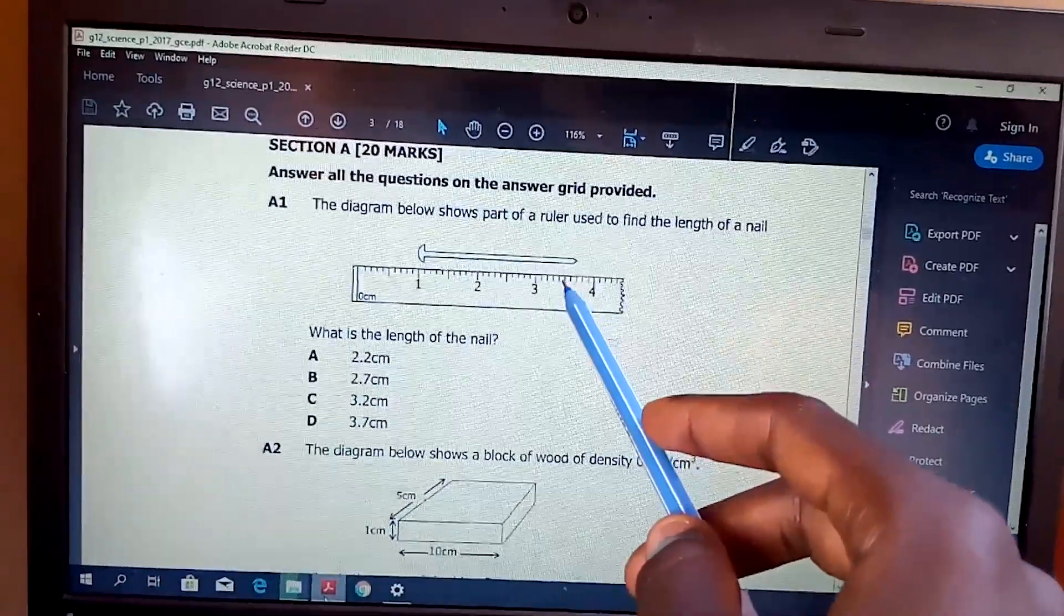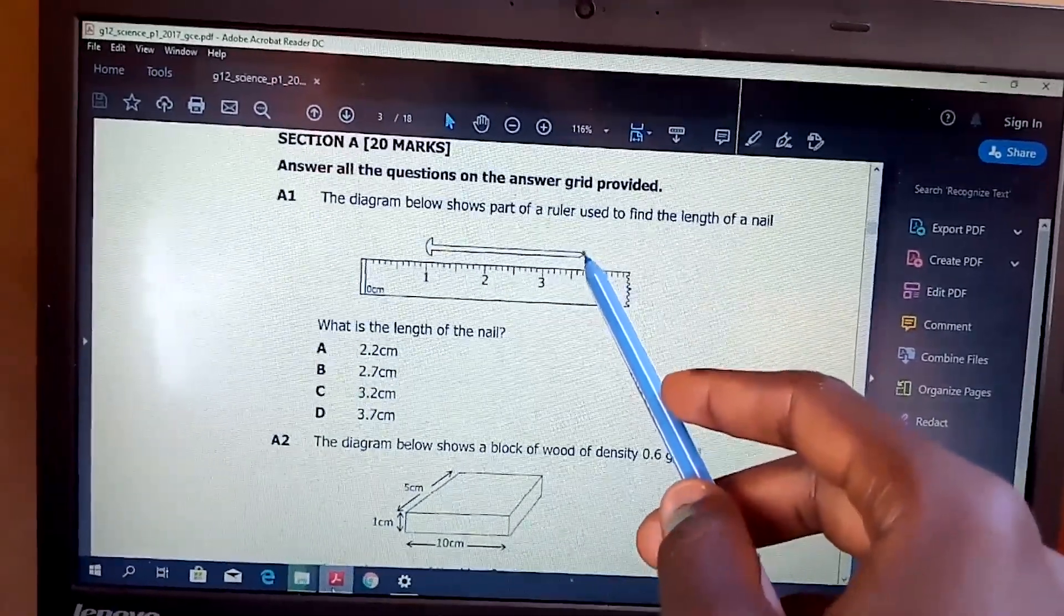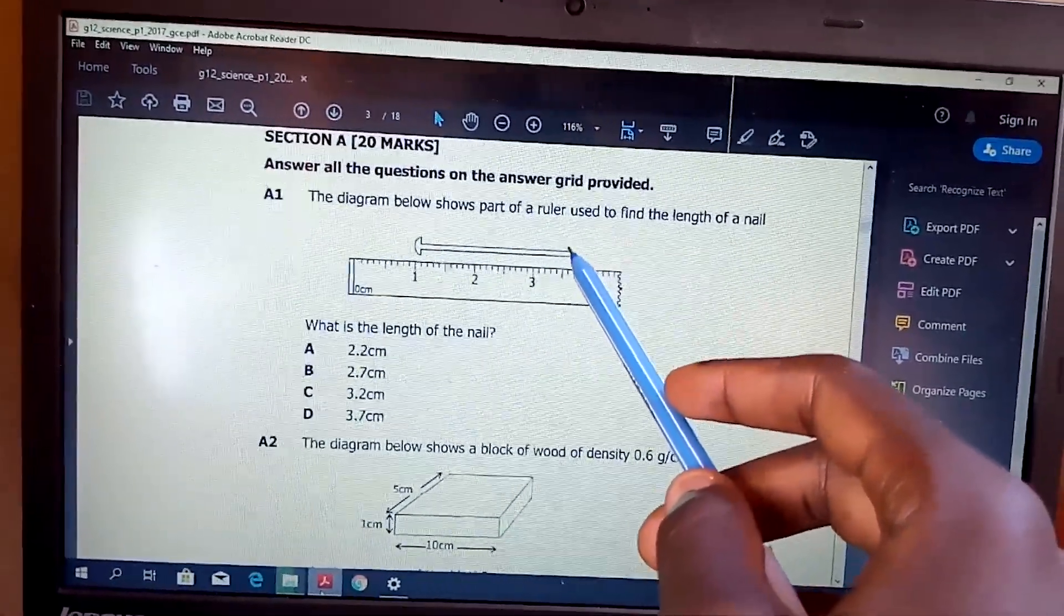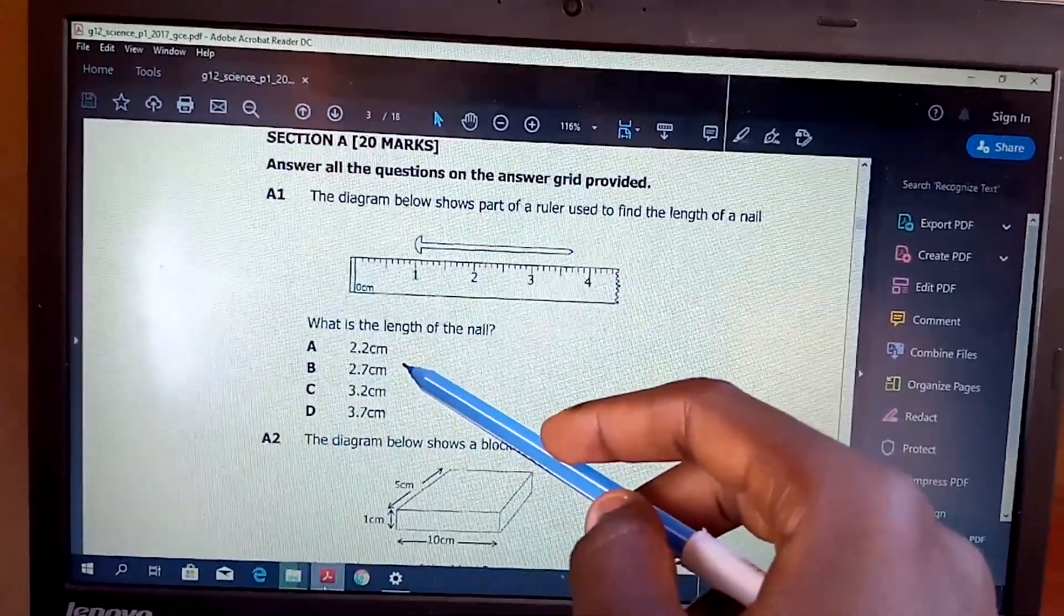So these are 1, 2, 3, 4, 5, 6, 7. They are in line here. So it's 2.7 cm. The answer is B. We go to question 2.